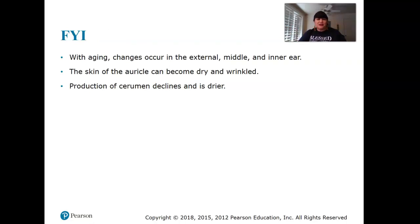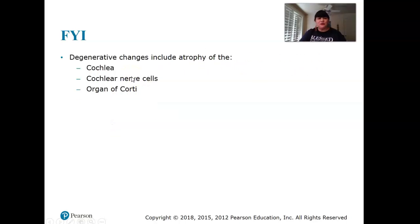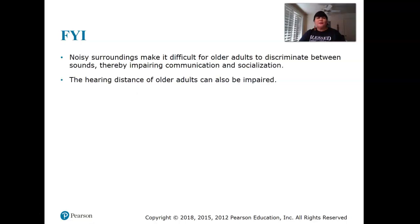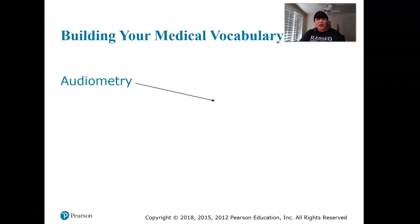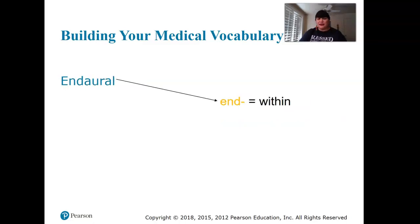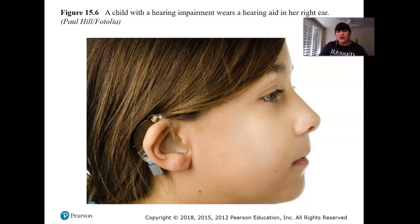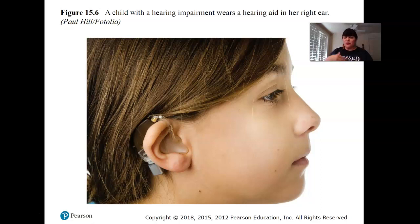With aging, the auricle becomes dry and wrinkled, and there are changes in the inner ear affecting sensitivity to sound, understanding speech, and balance. Hearing loss results from degenerative changes in the inner ear. For older adults it can be hard to discriminate sound in noisy environments. Hearing aids can help by amplifying sound, and there are now apps on the phone that can help people with hearing as well.